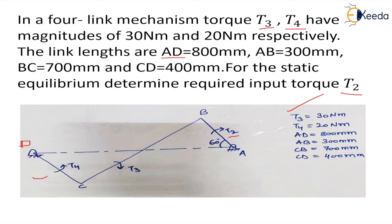The angles are given, all the values are given. So we take some appropriate scale — I have not taken the scale here, I have just made the diagram to help you understand the concept. You can take, let's say, 150 mm = 2 cm or whatever scale you want. On the basis of that scale, first you draw the diagram, because once you know the diagram only then you can do the free body diagrams and do the force analysis.